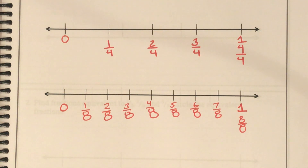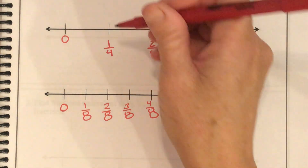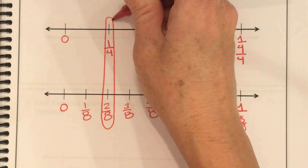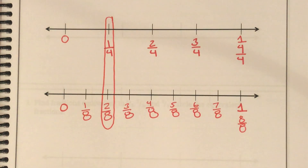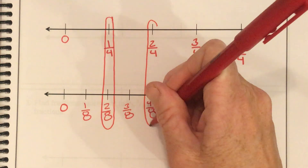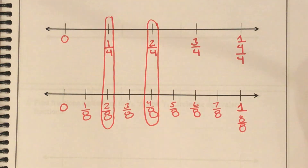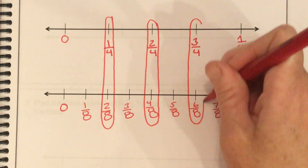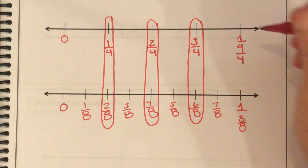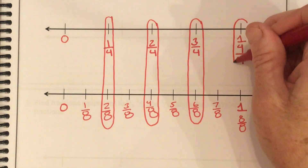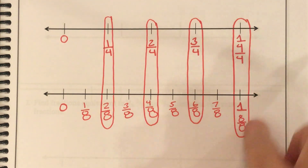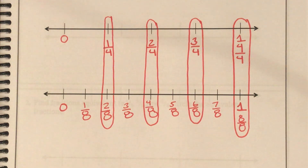Now that I've done that, they want me to find equivalent fractions for one-fourth. Look: one-fourth and two-eighths are exactly the same spot on the number line. Two-fourths is exactly the same spot as four-eighths. Three-fourths is exactly the same as six-eighths. And four-fourths is the same as eight-eighths. So I found equivalent fractions that way.